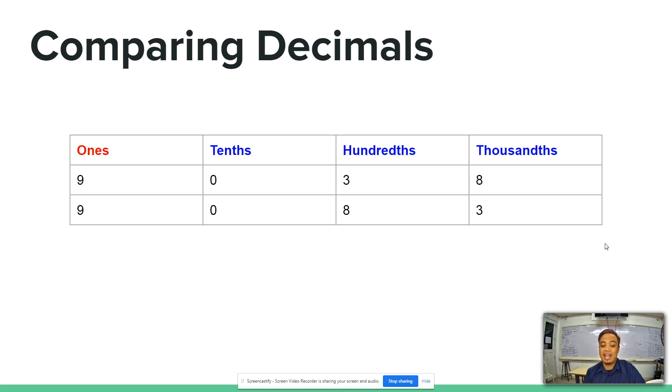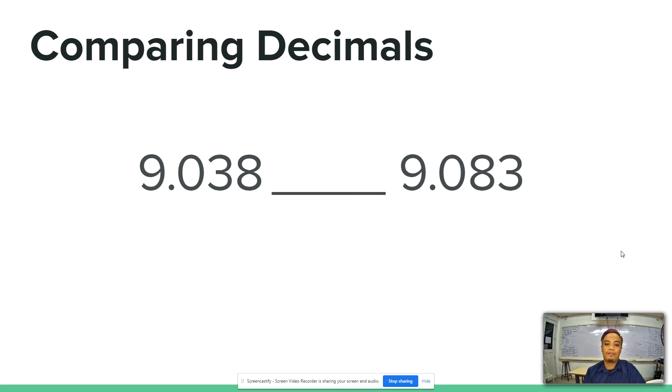So in 1's place, they have the same digit up to the 10's place. Now looking on the 100's place, we have here 3 and 8. We know that 3 is less than 8. Therefore, we will use this symbol to express that 9.038 is less than 9.080.